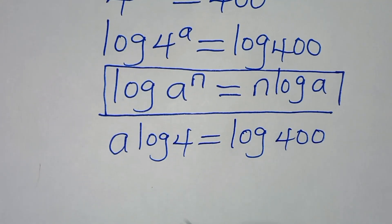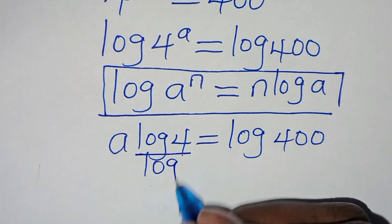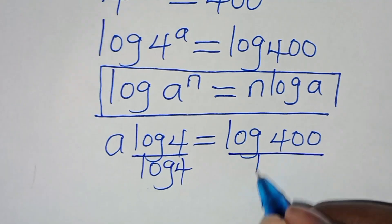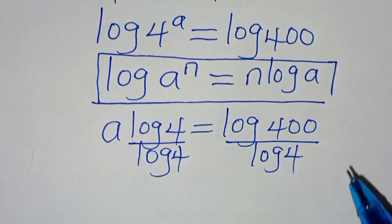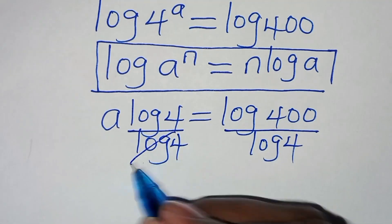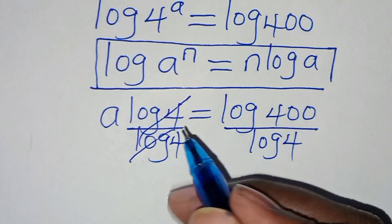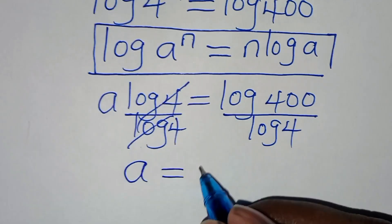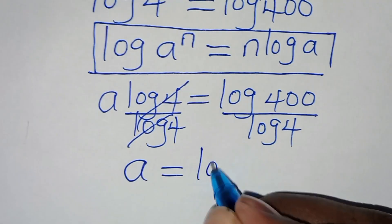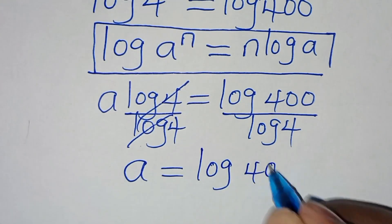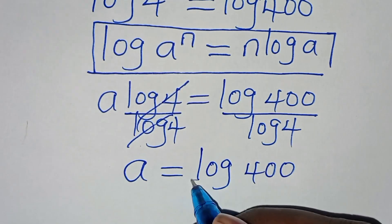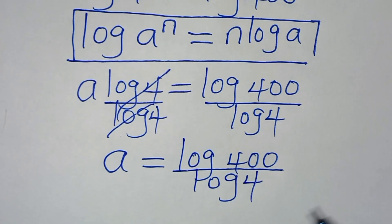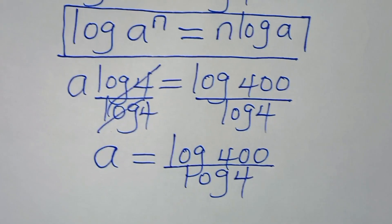The next step is to divide both sides by log 4. Simplifying log 4 and log 4, we get a equals log 400 divided by log 4.